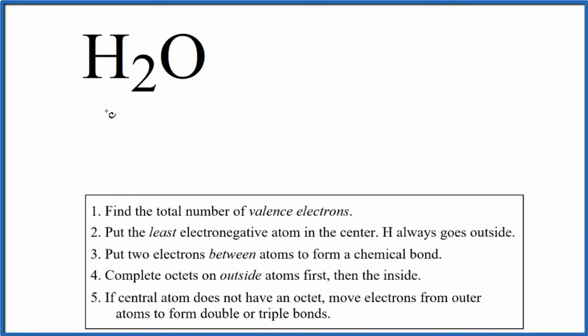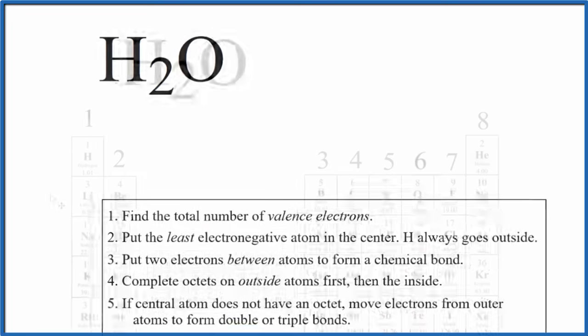Let's draw the correct Lewis structure for H2O, water. When we draw the Lewis structure for water, first thing we want to do is count the total number of valence electrons. We can use the periodic table to help us.